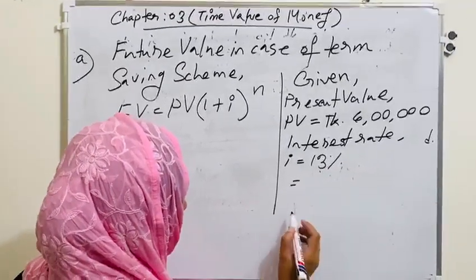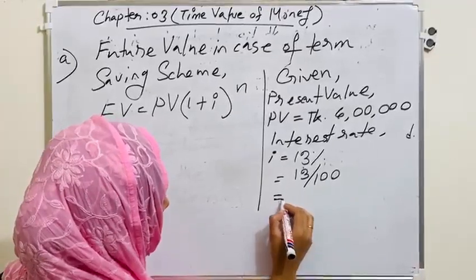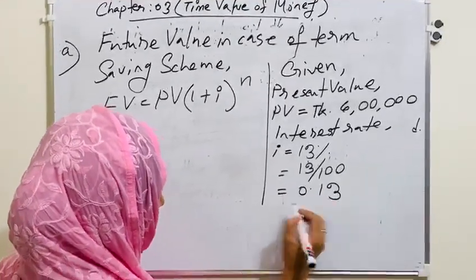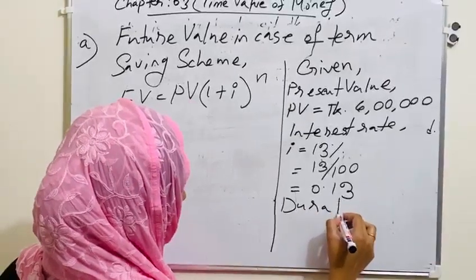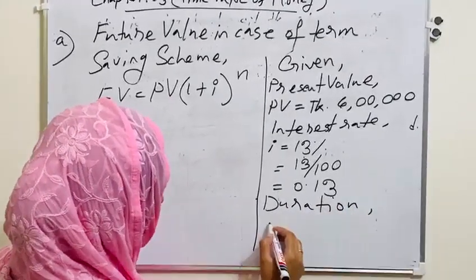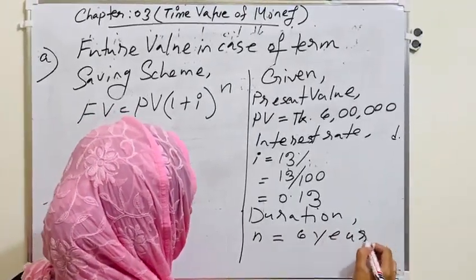First we have to write the given. Present value, PV equals to 6 lakh. Interest rate I equals to 13%, which is 0.13. And duration N equals to 6 years.